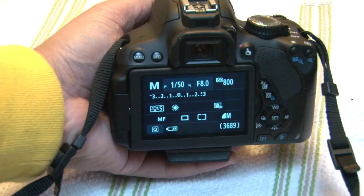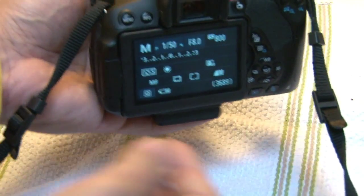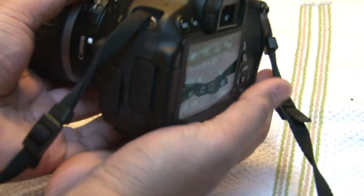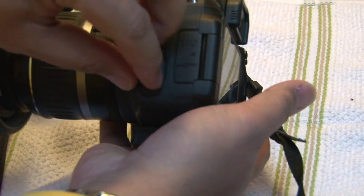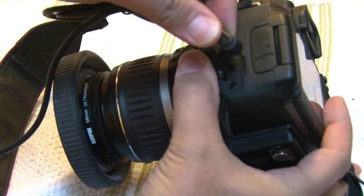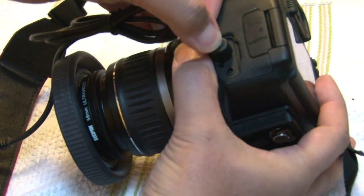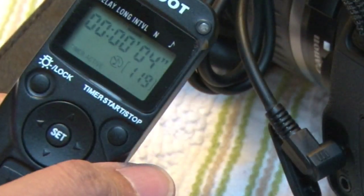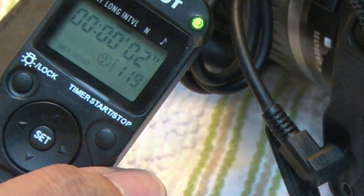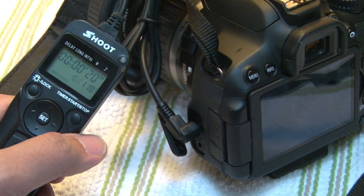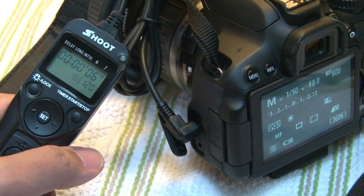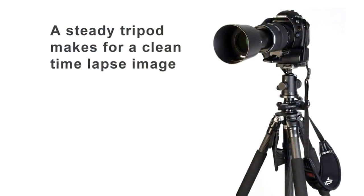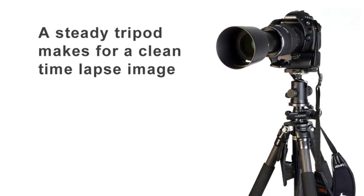Now it's time to connect the time-lapse program into your SLR camera. You need to open the little door on the side of your camera body, insert the eighth-inch plug into the proper input jack, and let's do a test. Yes, we have a connection. The final thing you need is a steady tripod, and you're ready to make your time-lapse movie.